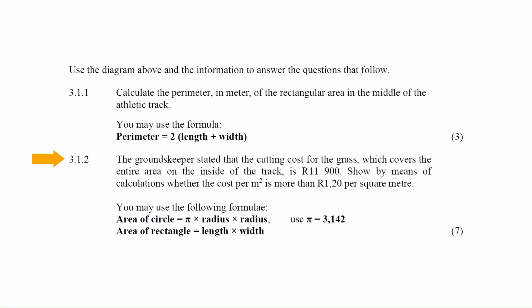In question 3.1.2, the groundskeeper stated that the cutting cost of the grass covering the entire inside area of the track is 11,900 rand. You must show by calculation whether the cost per square meter is more than R120. You may use: area of a circle equals π × r², where π = 3.142, and area of a rectangle equals length × width.